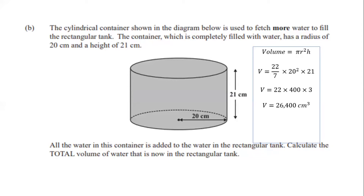We've now calculated the cylinder volume. We're pouring this 26,400 cm³ into the rectangular tank, which already holds 30,000 cm³. So the total volume is 30,000 cm³ plus 26,400 cm³, which gives us 56,400 cm³ as the total volume of water now in the rectangular tank.